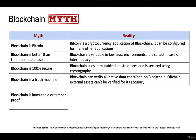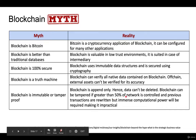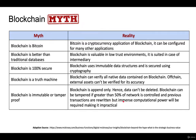Is blockchain immutable or tamper-proof? It is immutable because it is append-only — you can only add data, not delete it. In that sense it becomes tamper-proof. However, if more than 50% of the network is controlled and previous transactions are rewritten, you would need immense computational power to find the truth, making it impractical to tamper. If you modify data in your own peer's block, the data in the other peers won't change, so it won't tally.